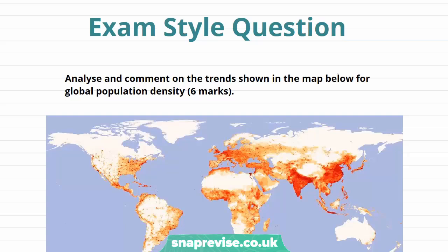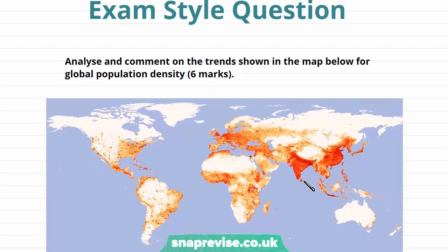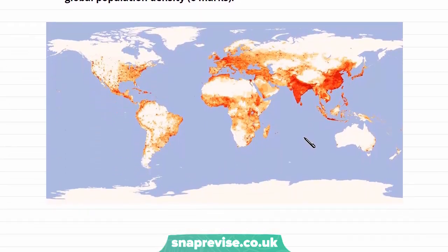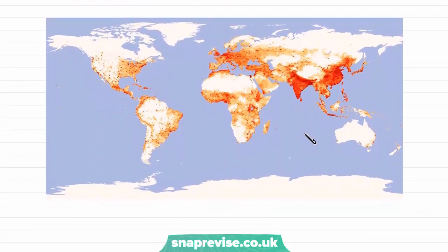To finish off the video, we are going to answer an exam style question. The question asks us to analyse and comment on the trends shown in the map for global population density. The map shows population density and its distribution across the world.